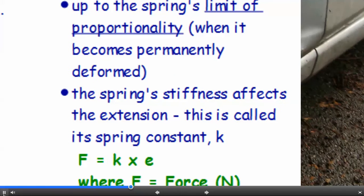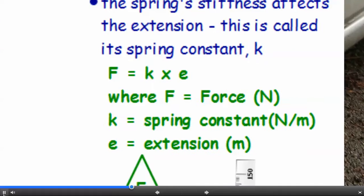The spring's stiffness affects the extension. This is called its spring constant, k. F equals k times e, where F equals force in newtons, k equals the spring constant measured in newtons per metre, and e equals the extension of the spring in metres. Remember that it's in metres, not centimetres.